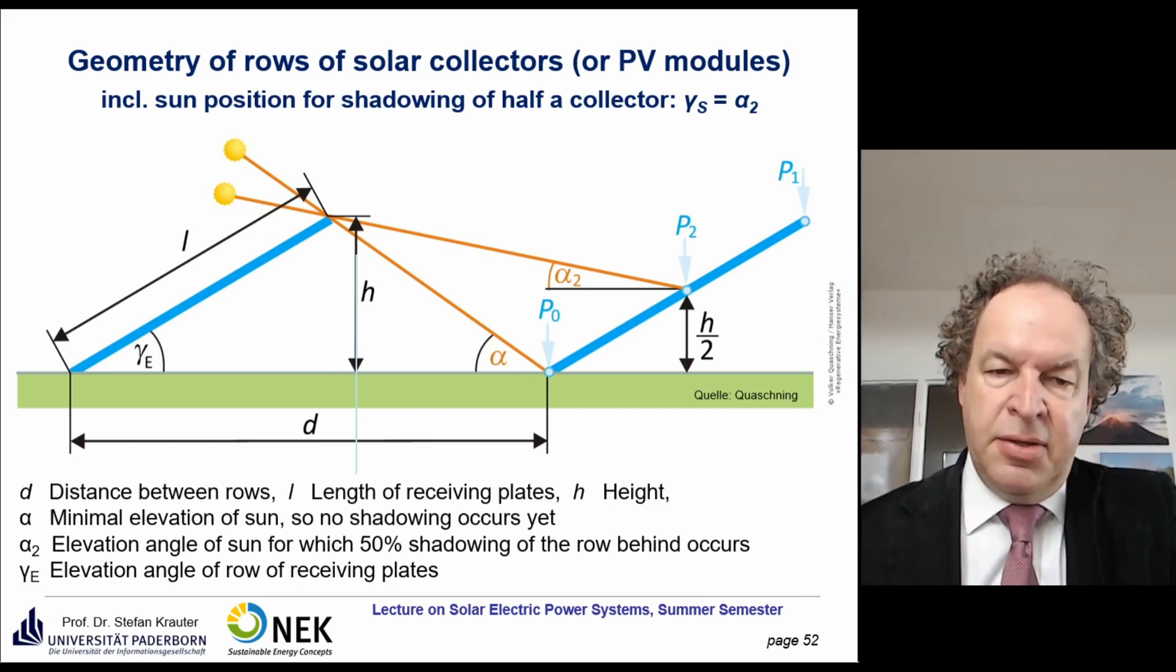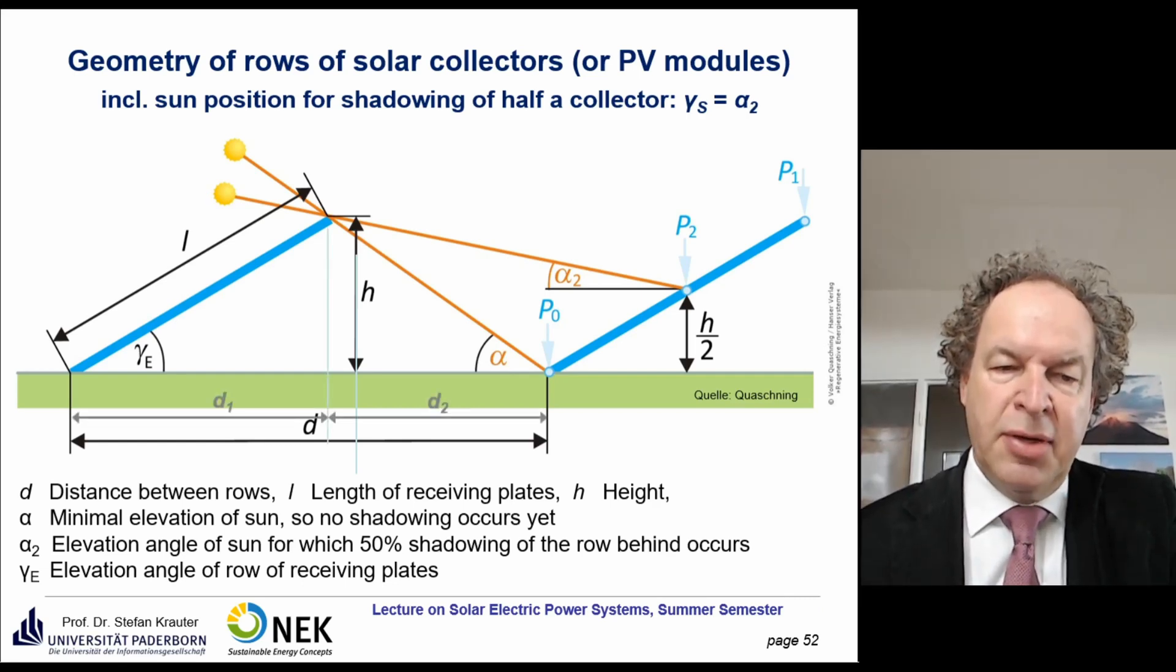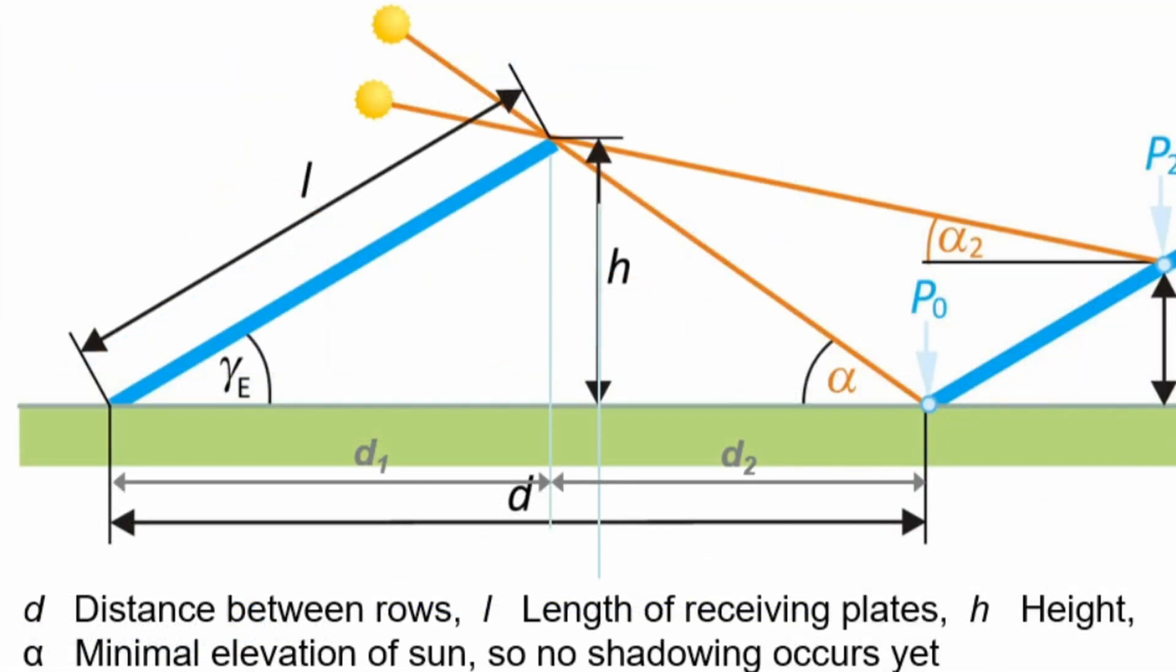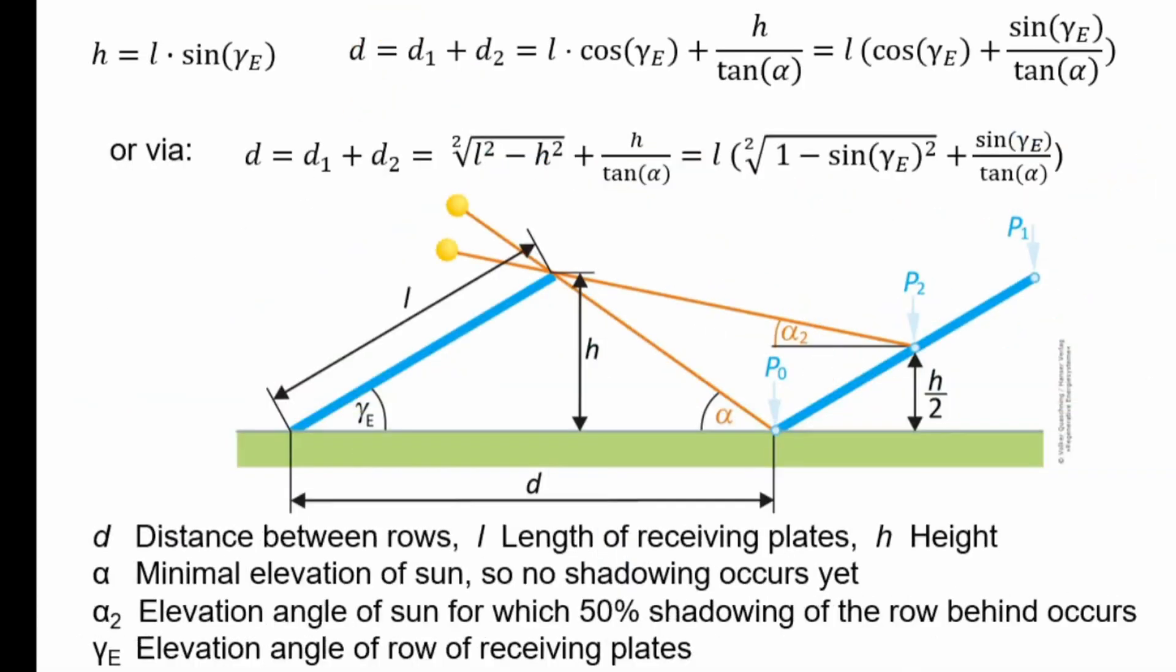So we saw the formulas according to that. In order to calculate, we divided that triangle up into two triangles with a 90 degree corner, and then we were able to calculate the several distances d1 plus d2.